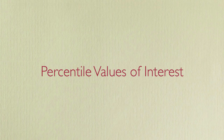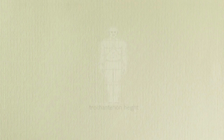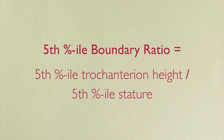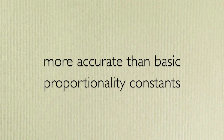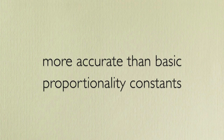The boundary ratios are created at percentile values of interest. Since we are interested in leg length, the boundary ratio is created using the 5th percentile value for leg length divided by the 5th percentile value for stature. This method is not completely accurate for populations of extremely different demographics, but it can be more accurate than basic proportionality constants.